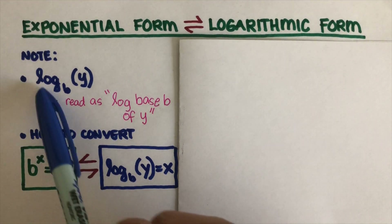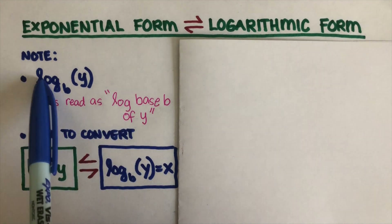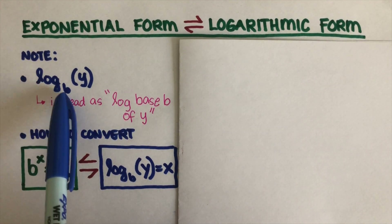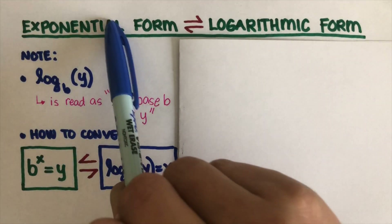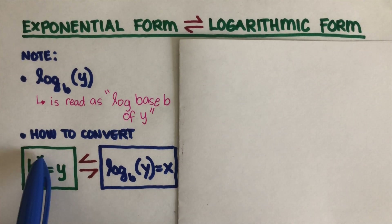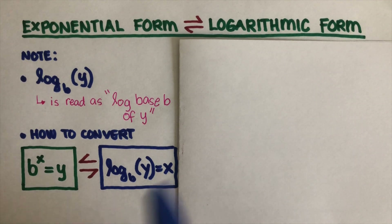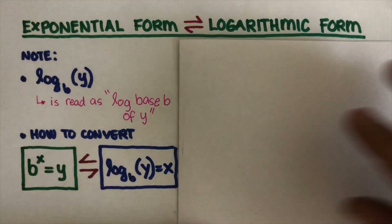Let's have an example here. This expression is read as log base b of y. So, log base b of y. This is the process on how to convert exponential to logarithmic form. If we have b to the power x is equal to y, we can convert it to its logarithmic form as log b of y equals x. Now, let's have an example to better see how we convert one to the other.